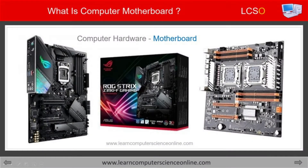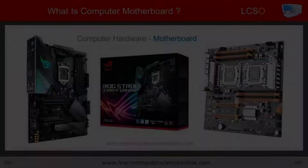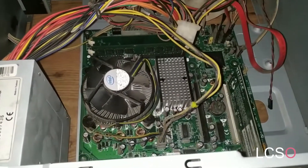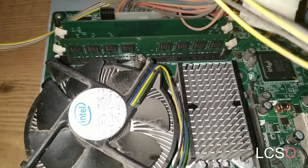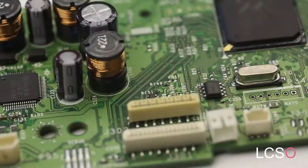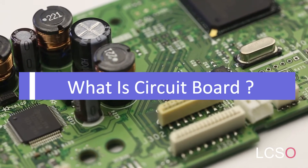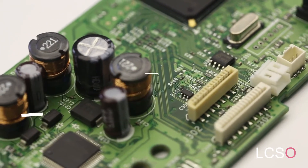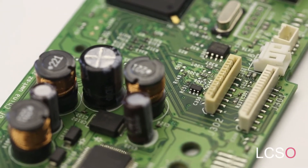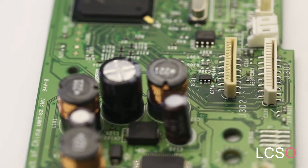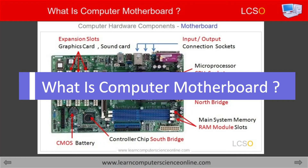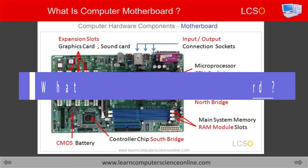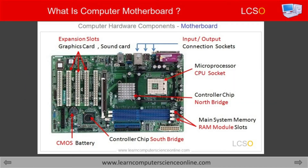After this brief overview, let us now explore in detail different parts of the motherboard, various connection sockets, and expansion slots present on the motherboard. Let us first find out what is a circuit board. Since motherboard is a circuit board, you might be wondering what is a circuit board. Well, a circuit board is a type of electronic component used in almost all electronic devices, including a computer. It is also commonly referred to as a printed circuit board, abbreviated as PCB.